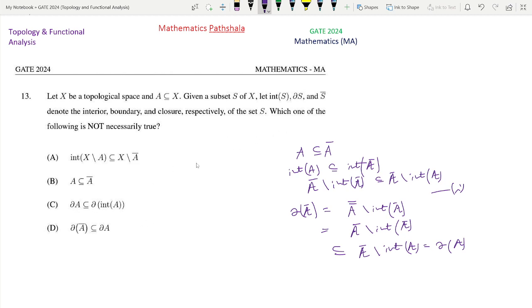It is said that which of the following is not necessarily true. So option C is true. So option C is not the option. Option C is not the correct option. Sorry, option D. Look at option D. So option D says that this delta A bar subset of delta A, which we have just proved. So this is the correct statement. So this is not the answer because we have to find the statement which is not true.